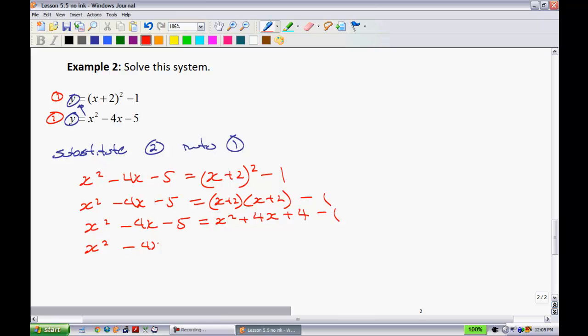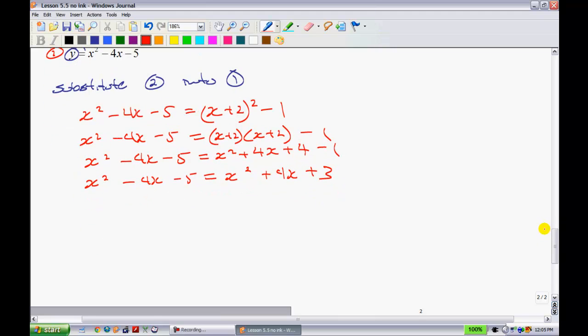Gathering my like terms, now I have x squared minus 4x minus 5 on the left-hand side equals x squared plus 4x plus 3 on the right side. Now, noticing that these are exactly the same, those will cancel out. I will now bring my x's to the right-hand side, add 4x to both sides, that gives me 8x. Subtracting 3 from both sides, I now have negative 8. That tells me, when I divide by 8, that I have a solution at x equals negative 1.